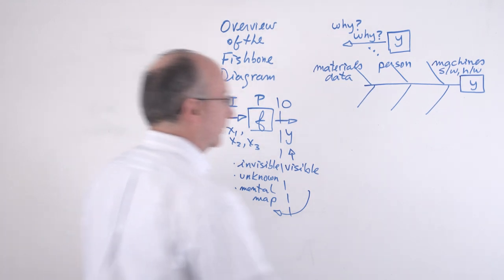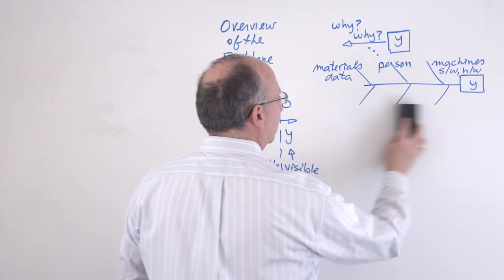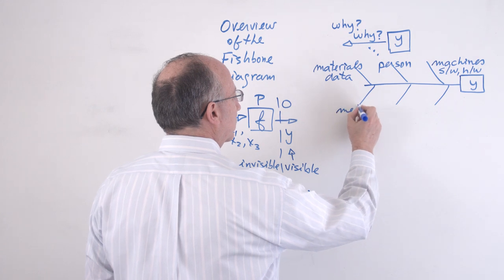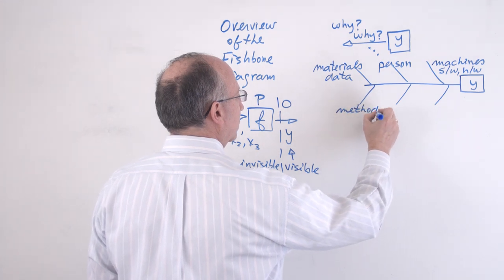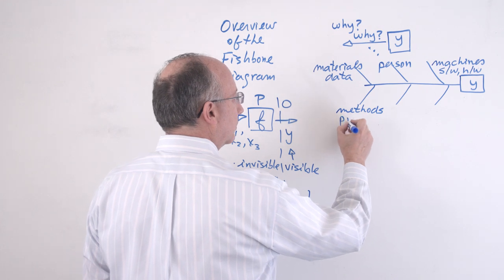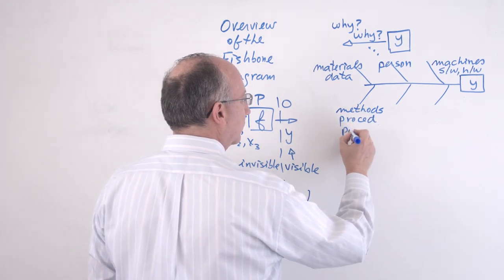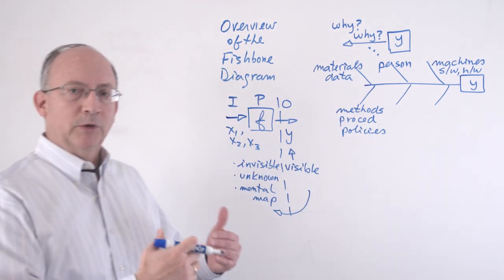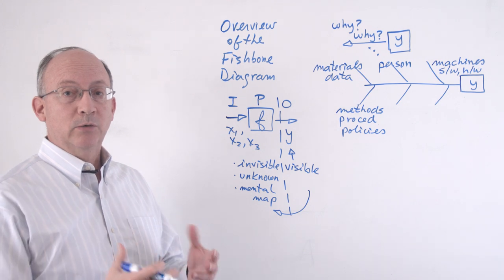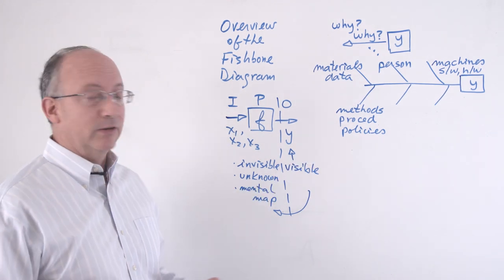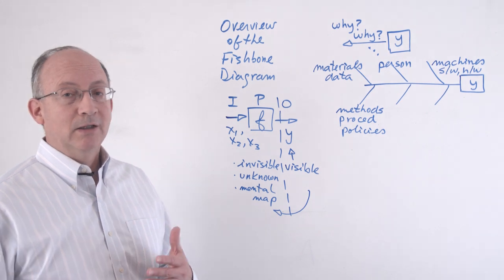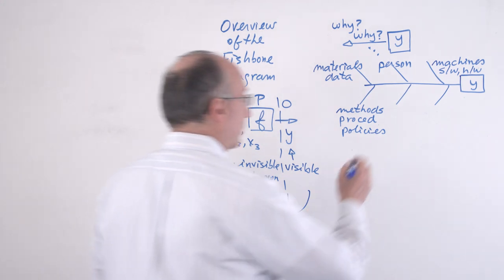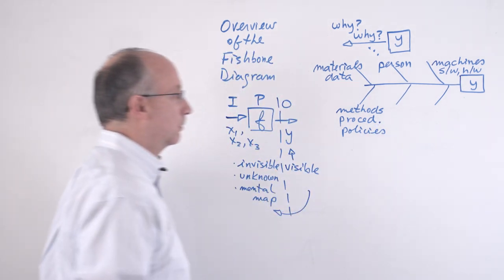Then Ishikawa tells us that some other categories of causes could be the procedures that we follow, sometimes known under the broad term of methods. This means procedures, this means policies, a number of things that tell us how we must work, which sometimes may constrain our ability to do things in a different way. Not that any of these are necessarily bad, it's just that they may be outdated or they may be rigid, in which case they may not result in what we want.